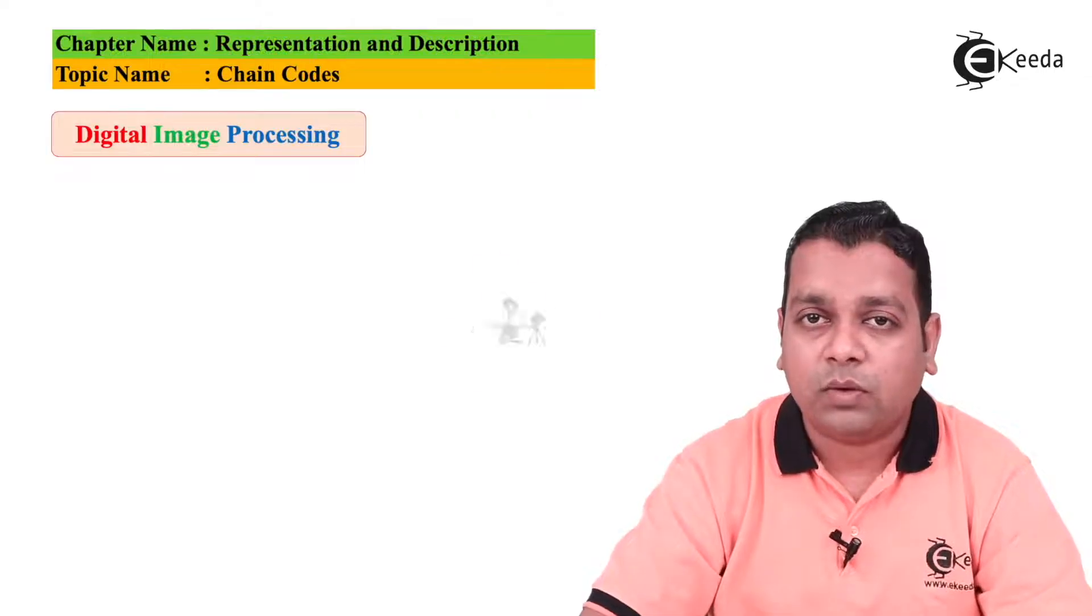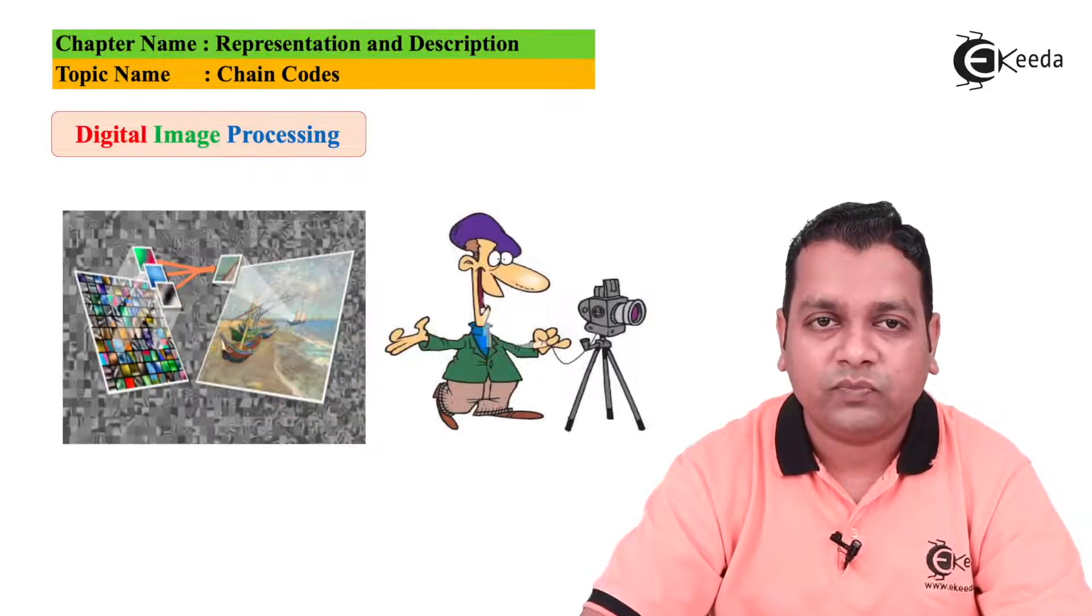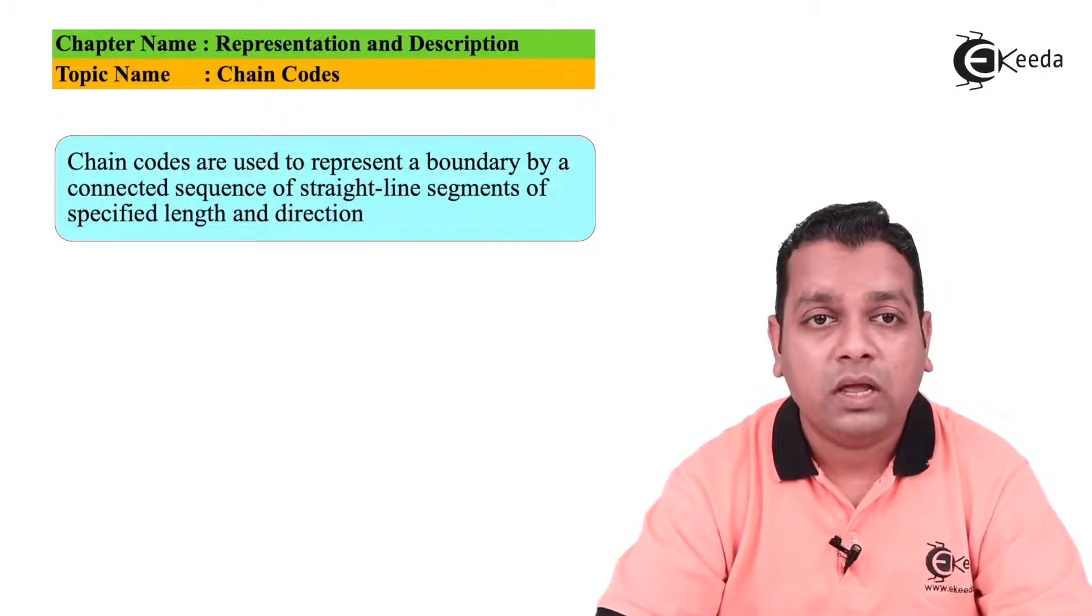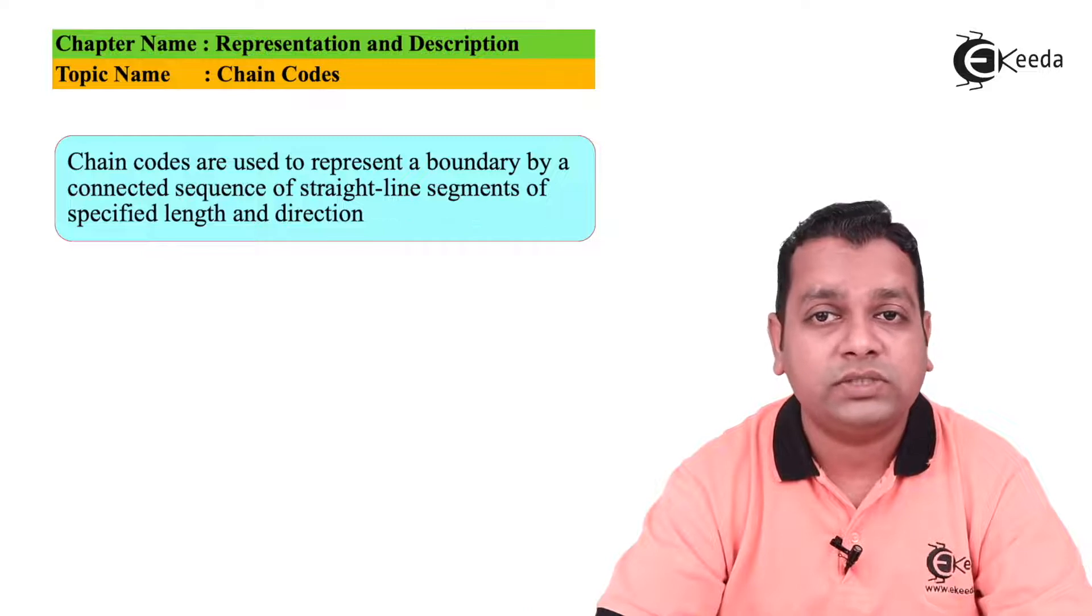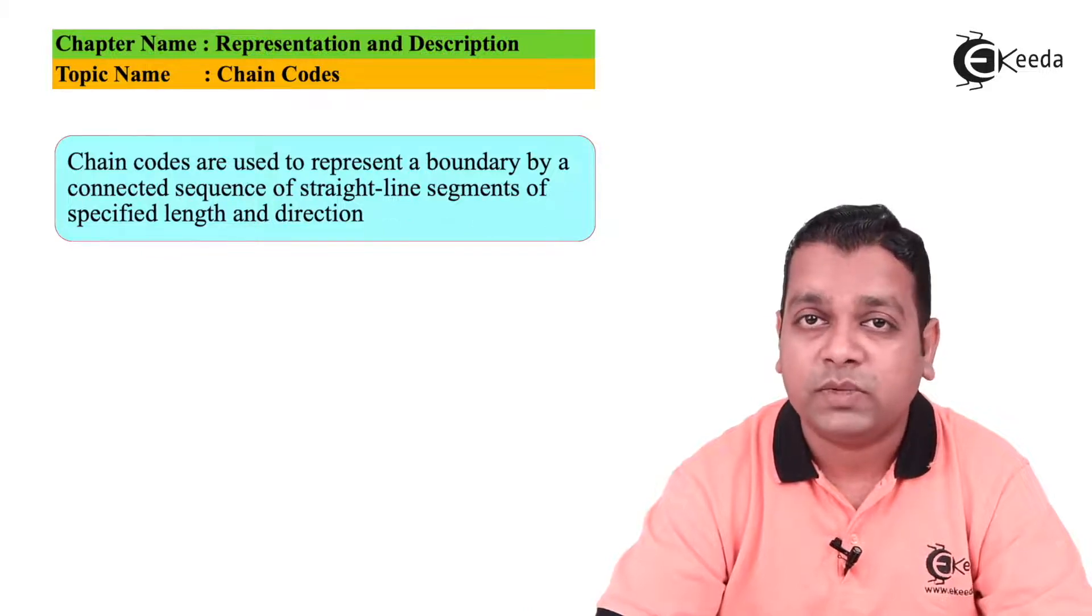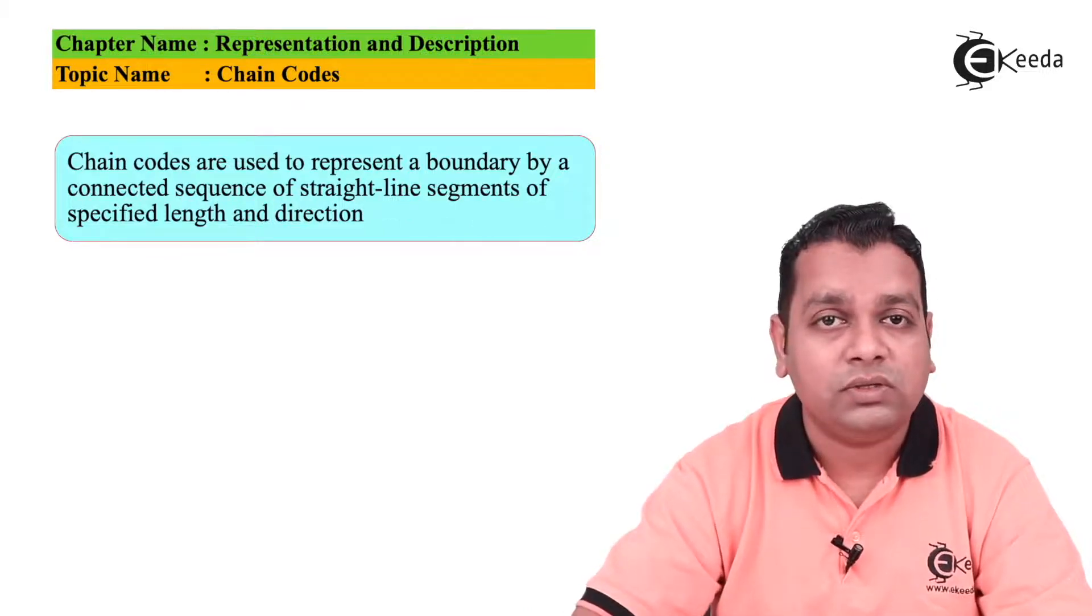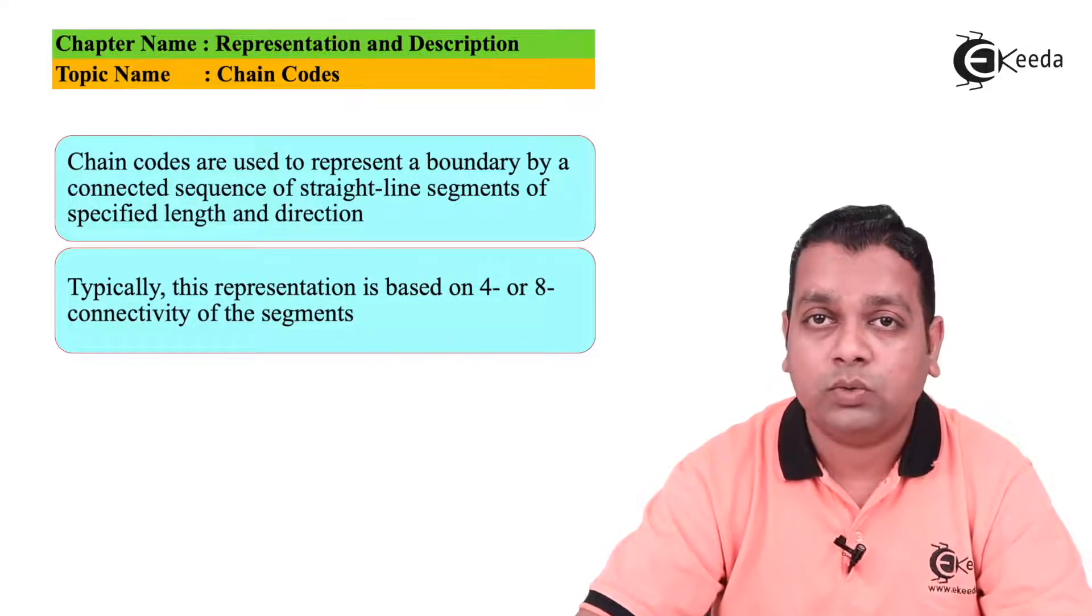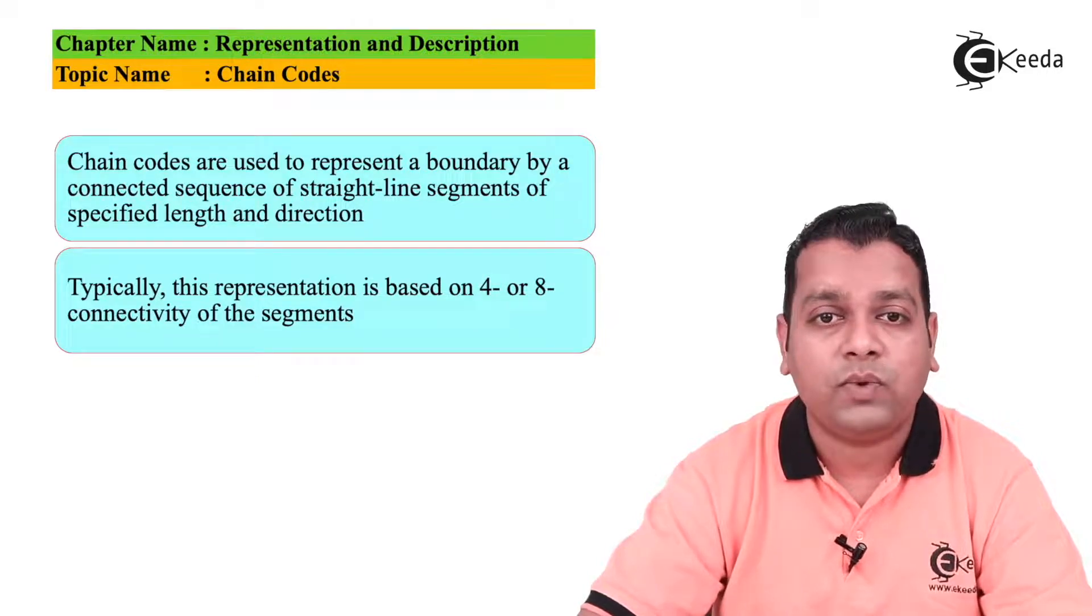The chain codes are used to represent a boundary by a connected sequence of straight line segments of a specified length and direction. Typically, the chain code representation of this type is based on the four or eight connectivity of the segments.